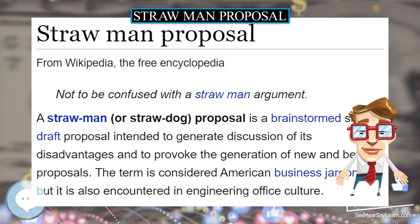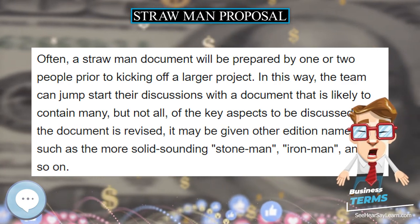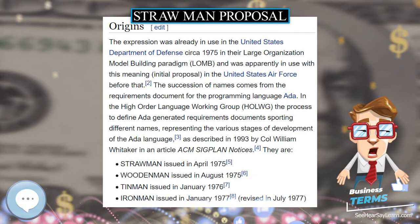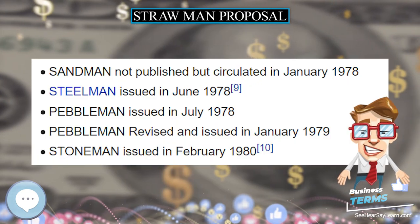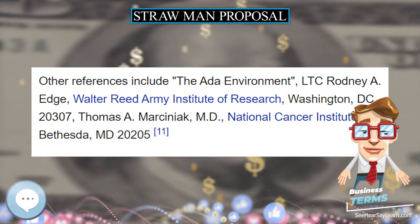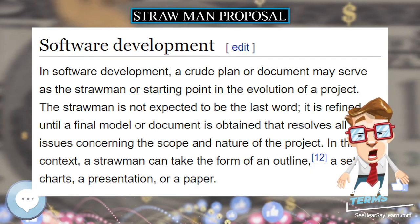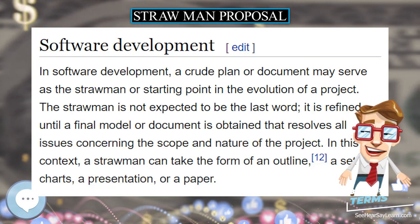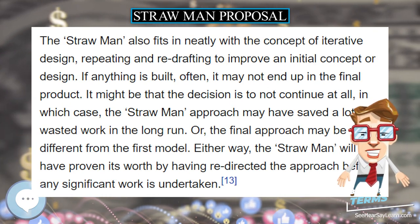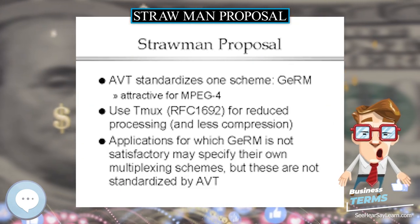The straw man also fits in neatly with the concept of iterative design, repeating and redrafting to improve an initial concept or design. If anything is built, often it may not end up in the final product. It might be that the decision is to not continue at all, in which case the straw man approach may have saved a lot of wasted work in the long run. Or the final approach may be very different from the first model. Either way, the straw man will have proven its worth by having redirected the approach before any significant work is undertaken.